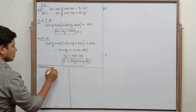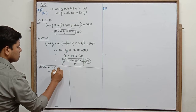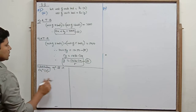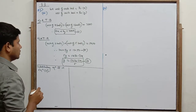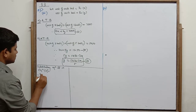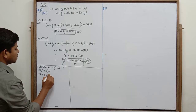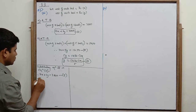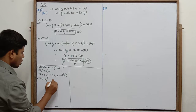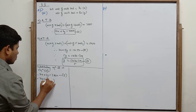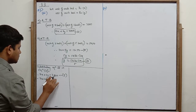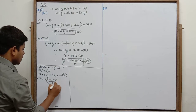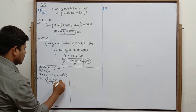Substituting equation 3 in equation 1. Equation 1 is: seven x plus six y equals 3800. Substituting y, we get: seven x plus 6 into (1750 minus 3x) upon 5 is equal to 3800.